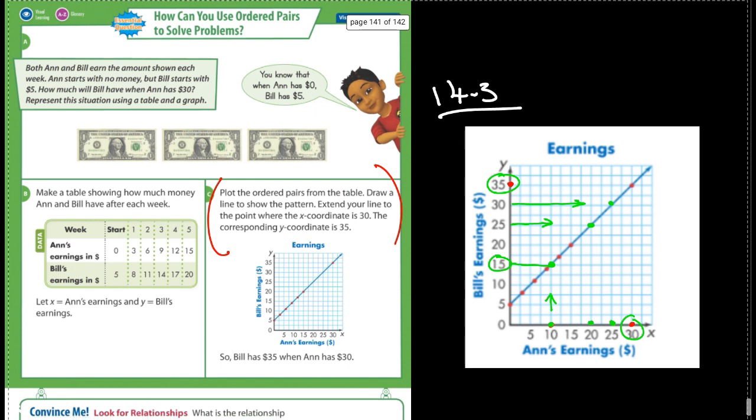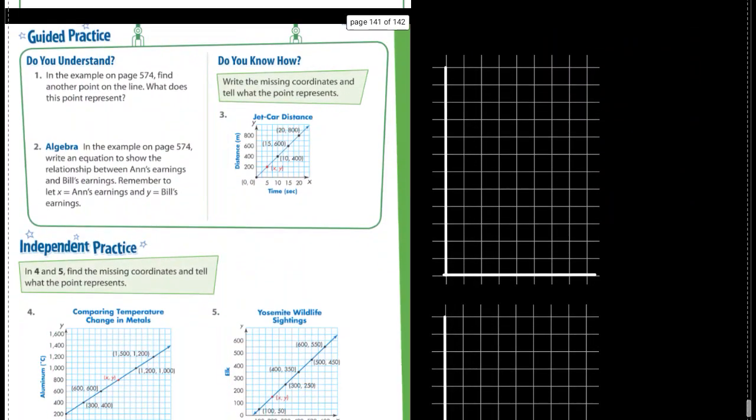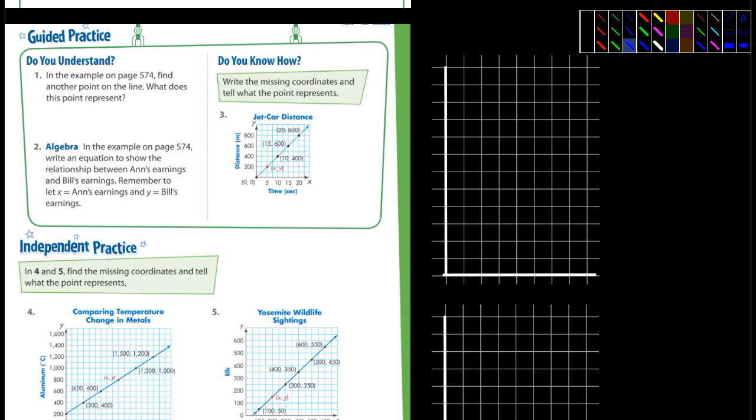What does that tell you? Well it tells you they earn the same, doesn't it? Because it never changes. Okay, let's see here, let's move this up. Guided practice. In the example on page 574, find another point on the line and what does that point represent? Well actually we already did that several times. We could say Ann has, what was one of the examples I said - Ann has 20 dollars and Bill has, remember what it was, 25 dollars.